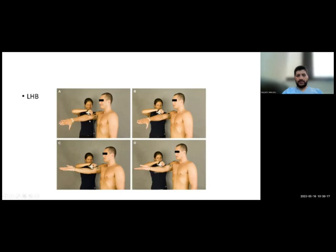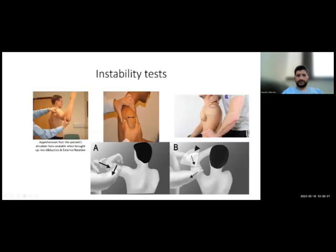These are the tests for the long head of biceps — the Speed test and the Yergason test. For instability, use the apprehension test, the Jobe relocation test, the sulcus sign for multidirectional instability or generalized laxity, and the load and shift test.